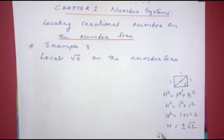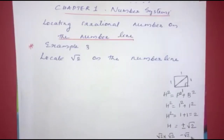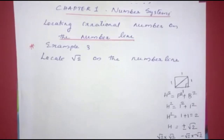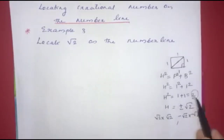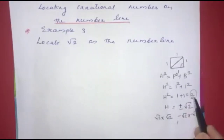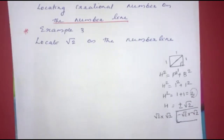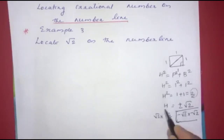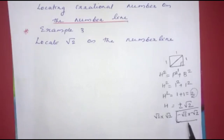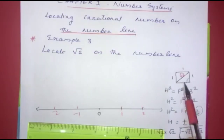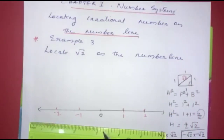That is why h = ±√2. If we do plus root 2 into plus root 2, or minus root 2 into minus root 2, we get 2. So 2 equals the square of root 2. We take the positive square root here. Next, we will place this triangle on the number line.